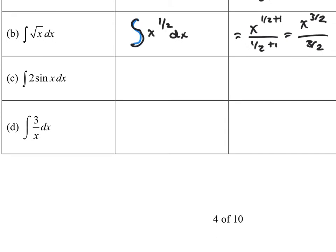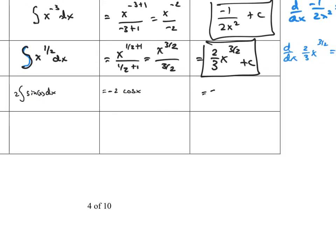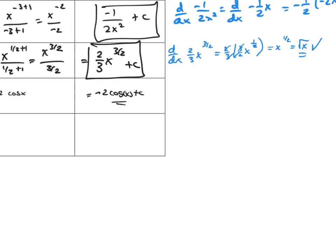How about the antiderivative of 2 sin(x) dx? Pull the constant out in front: 2 times the antiderivative of sin(x). Be careful here — you might think the answer is cosine of x, but that's not quite right, because the derivative of cosine of x is actually negative sine of x. To compensate, put a negative out in front. The answer is negative 2 cosine of x plus C.